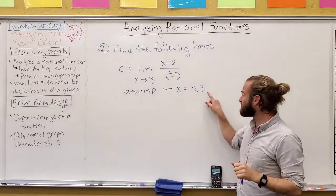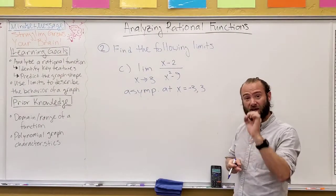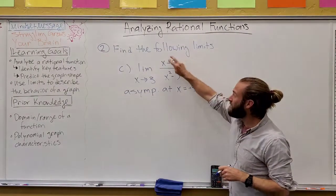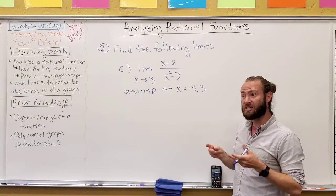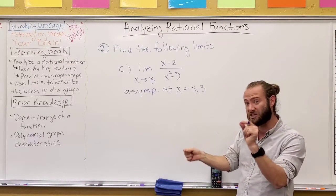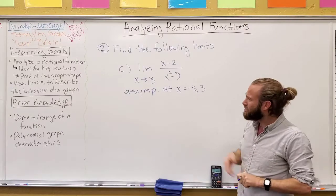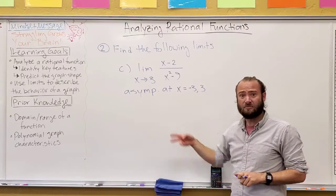basically, we know that the asymptotes here are at x equals negative three and positive three. In the g of x function, positive three was actually instead a hole because we could make an equivalent function to this, or a similar function, and then plug into that and see what the function wanted to be.